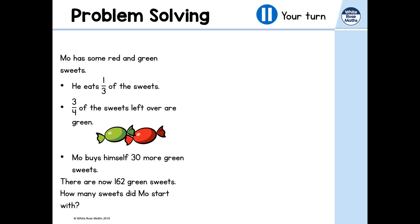Let's go on to the next one. Pause the video and have a go at this problem. Mo has some red and green sweets. He eats one-third of the sweets. Three-quarters of the sweets left over are green. Mo buys himself 30 more green sweets, and there are now 162 green sweets. How many sweets did Mo start off with? Let's have a go at the bar model for this one.